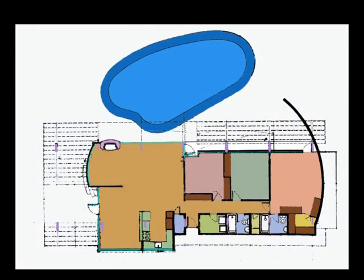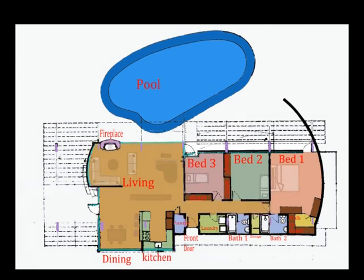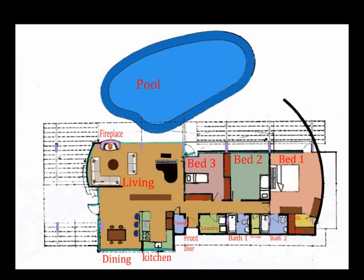Now we're going to take a look at the floor plan. The house has a pretty straightforward layout. The kitchen, dining, and living area are all placed in one space. I've decorated the drawing with furniture to give an indication of the size and dimensions.